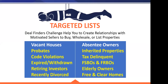When you do a targeted list, you can pick different types of motivations. We typically start with absentee owners and vacant property owners because they make up the largest segment of potentially motivated sellers. There are other types like probates, inherited properties, code violations, tax delinquency, expired and withdrawn listings, FSBOs, and FRBOs.